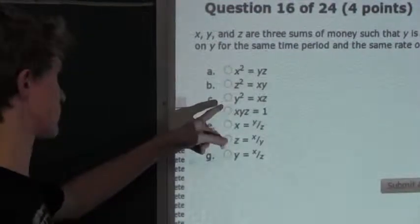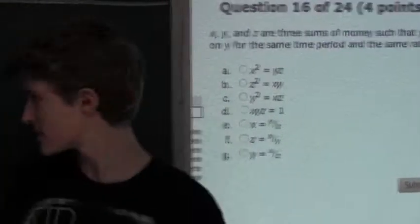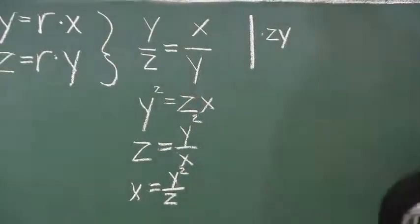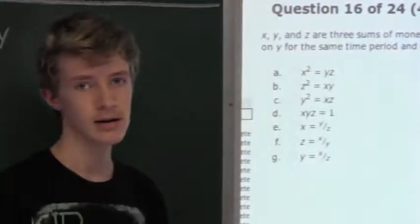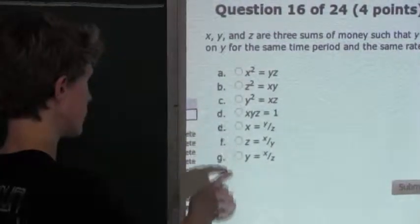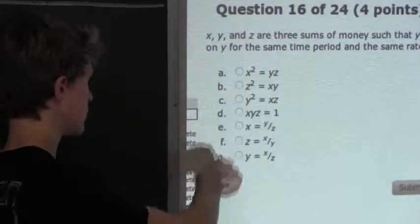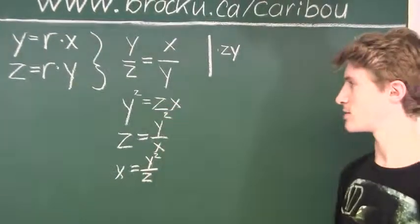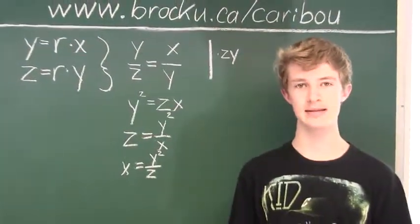Now option C says Y squared equals XZ. And as you can see here we have Y squared equals XZ, so we know that option C is correct. For the remaining options, these relations are not compatible with these relations, so we know that option C is correct.